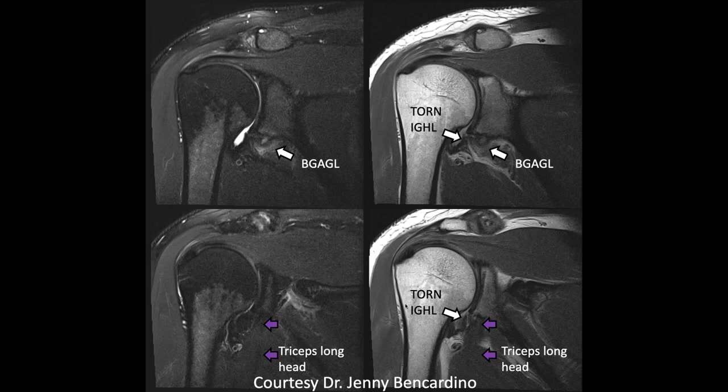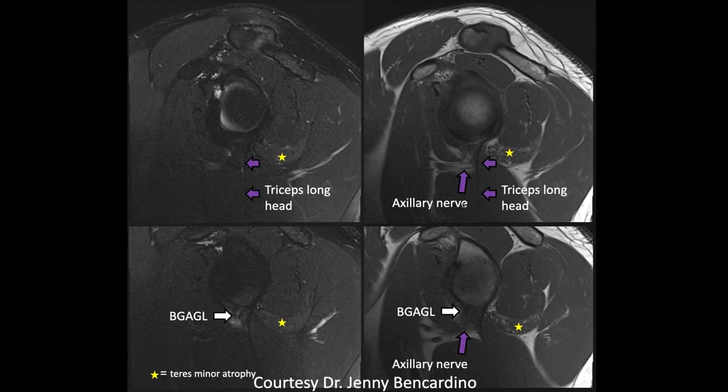Looking further at the images, there's a torn inferior glenohumeral ligament and a bony osseous injury to the inferior glenoid with mild edema. One other thing to consider in these injuries, especially after MRI shows a torn inferior glenohumeral ligament, is to put the patient in a sling for a couple of days and get bilateral X-rays with the patient standing.